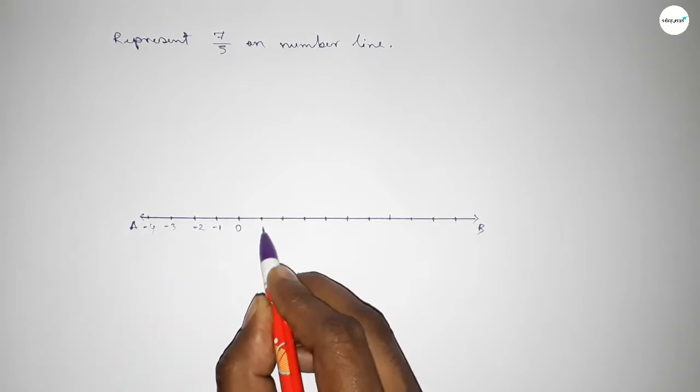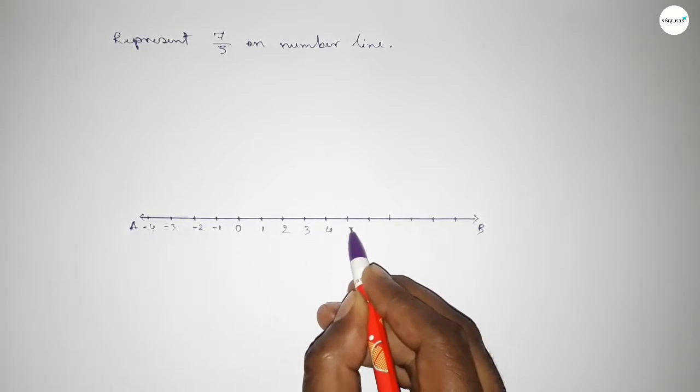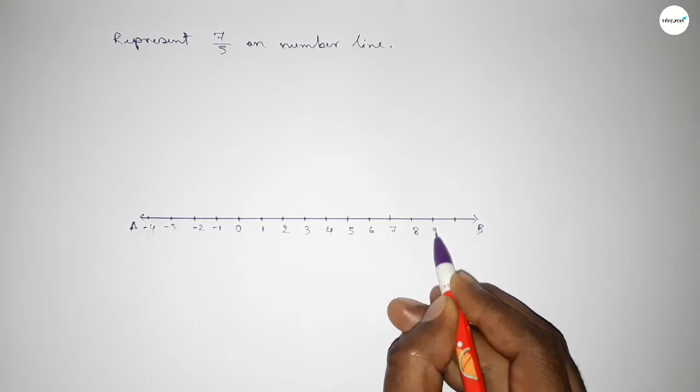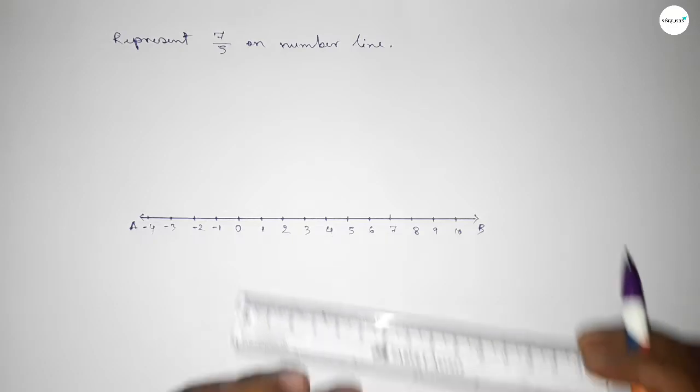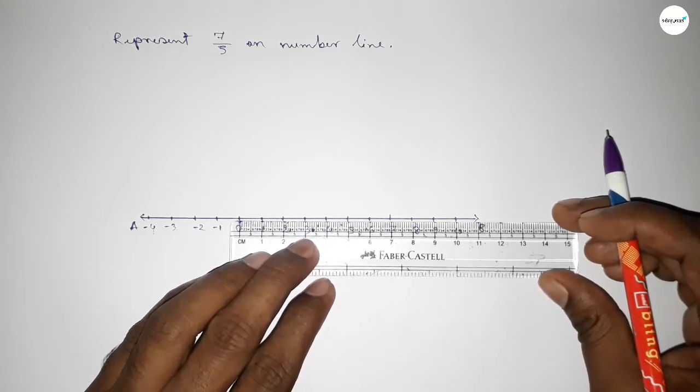Now we have to divide the distance between any two numbers into 5 parts. So if we divide the distance between any two numbers into 5 parts, then the length of each part equals 0.2 unit.